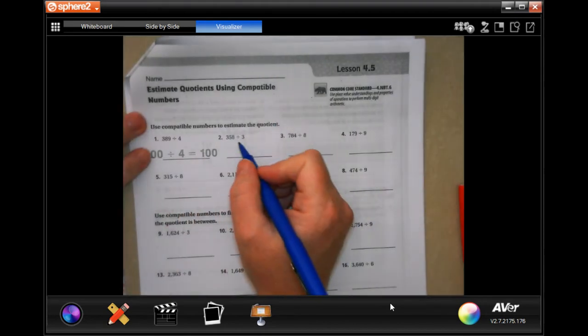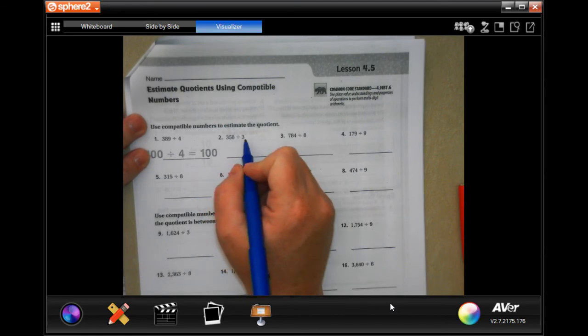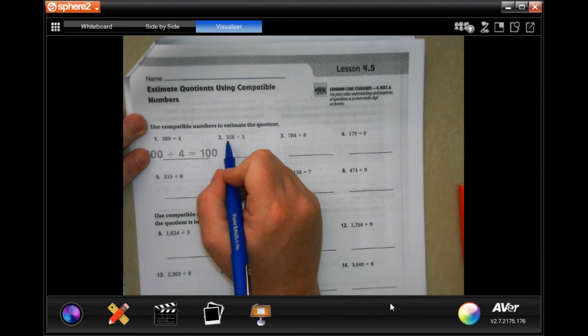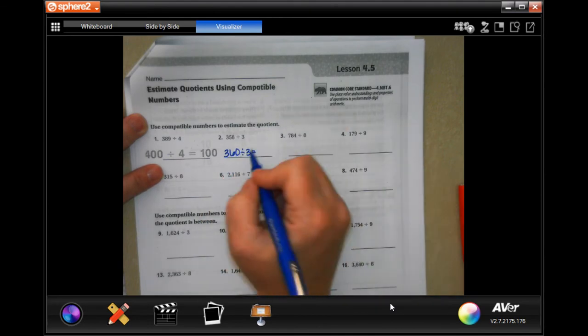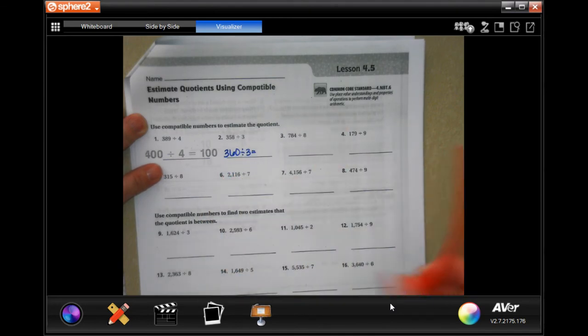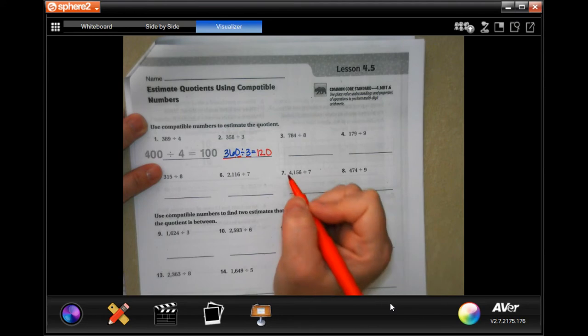So it wants us to use compatible numbers to estimate the quotient. 358 is not compatible with 3. So what it wants us to do is to make 358 something along the lines of 360 and divide that by 3. So now 3 goes into 36 twelve times and then add on that 0.